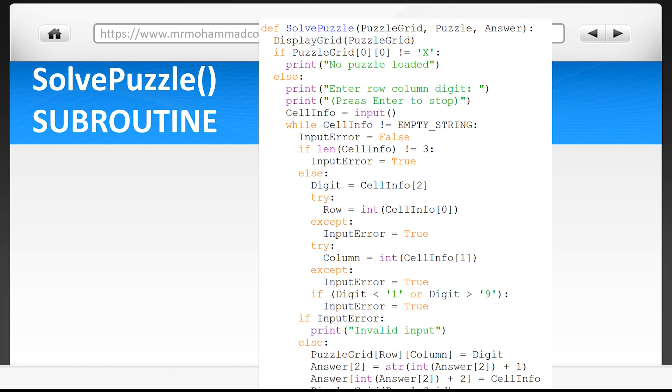Everything the user does here is stored inside puzzle grid. Oh, one more thing you might be wondering what the line answer index two equals string integer answer index two plus one is doing. Well this line seems to add up how many entries the user is making. Remember answer index two starts off as zero initially.